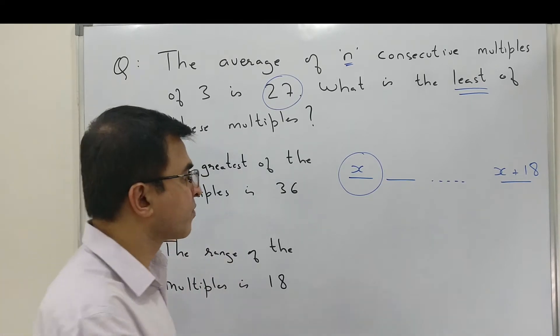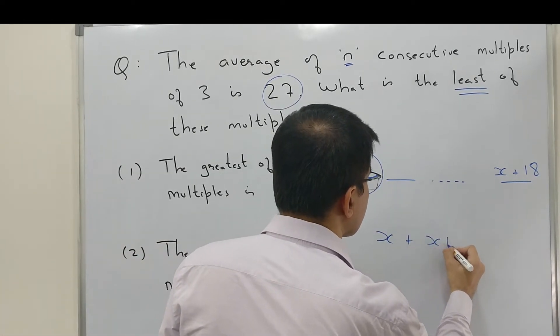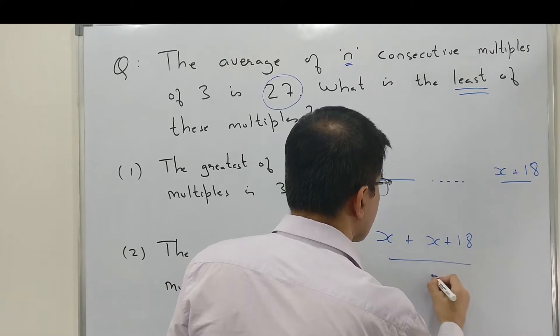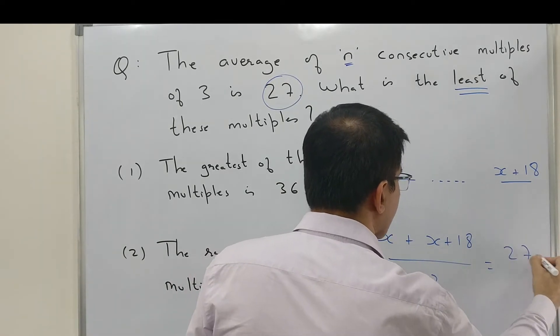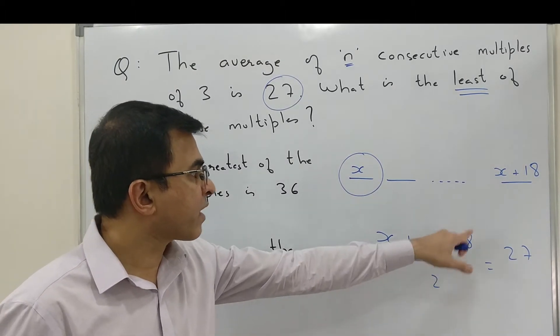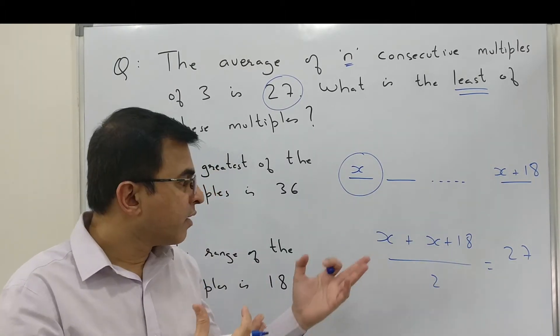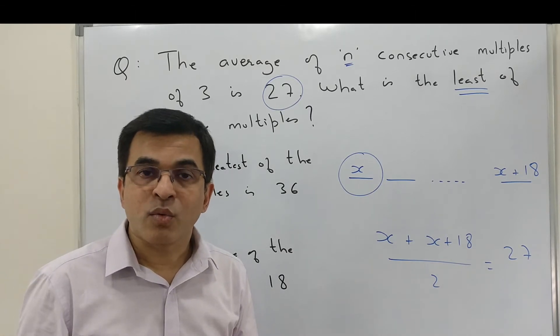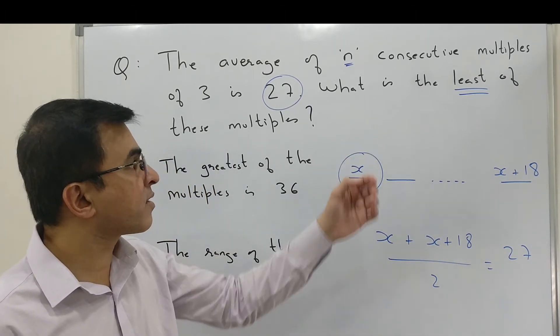Therefore, this is the equation that we get: first term plus last term divided by 2 is the average. Clearly we can work out x. Once we work out x, we know the least term, and hence we are able to answer the question.